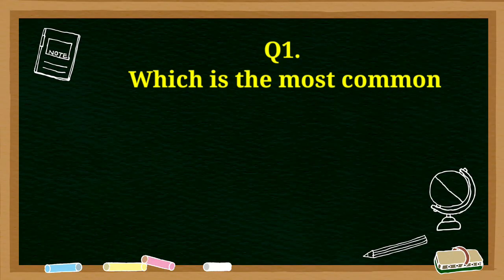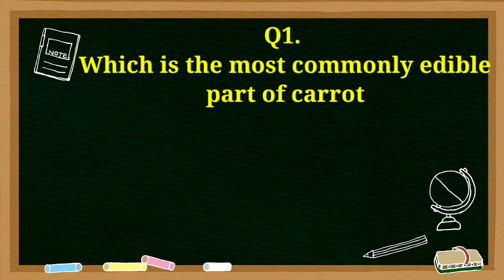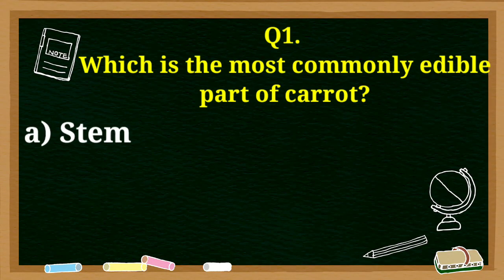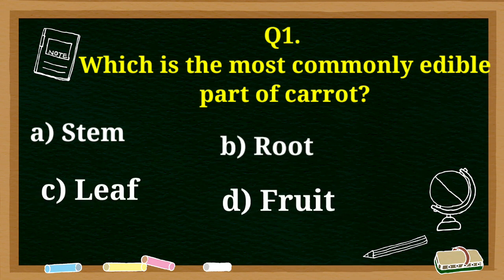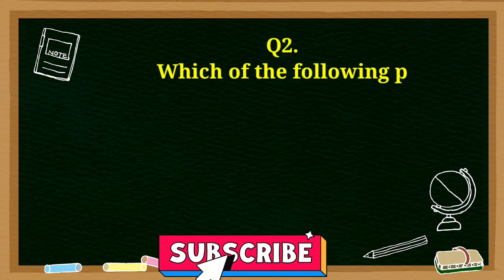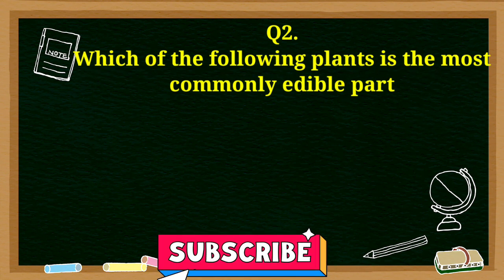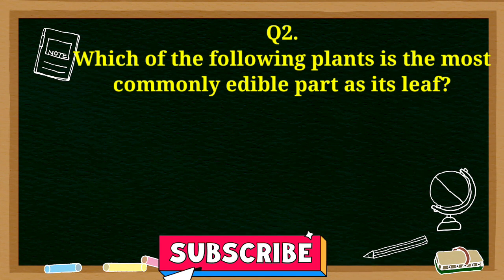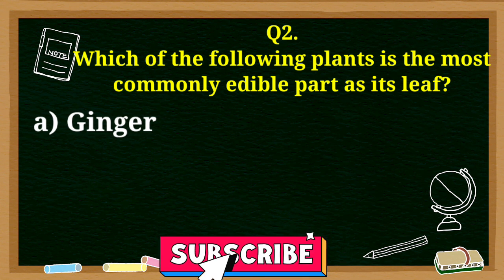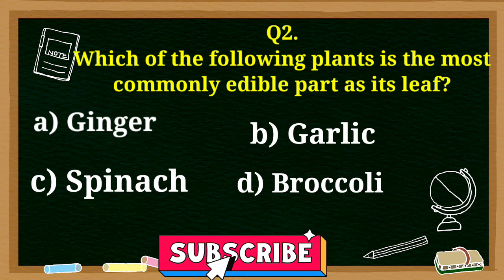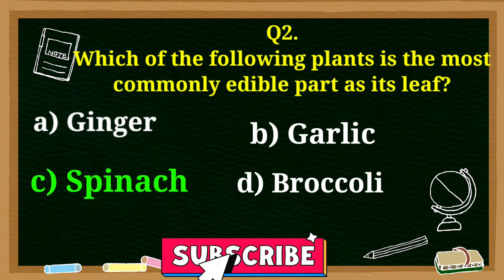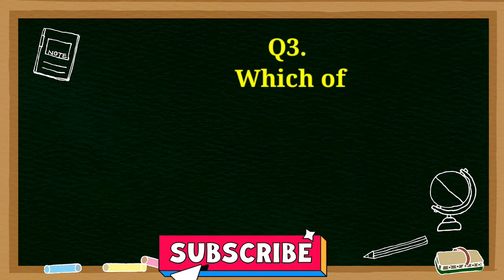Which is the most commonly edible part of carrot: stem, root, leaf, or fruit? Answer is root. Which of the following plants has its leaf as the most commonly edible part: ginger, garlic, spinach, or broccoli? Answer is spinach.